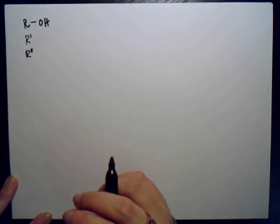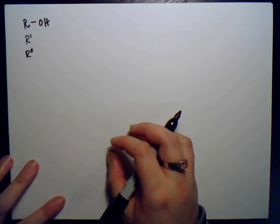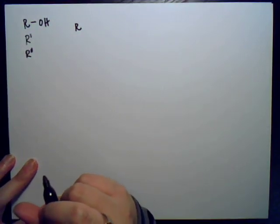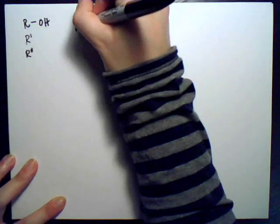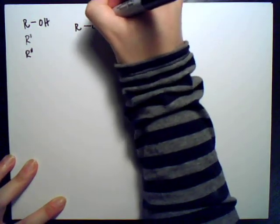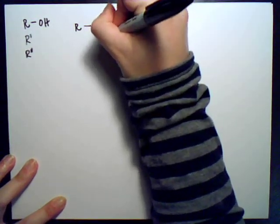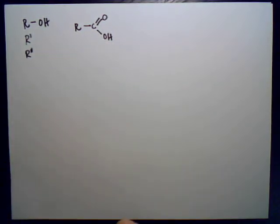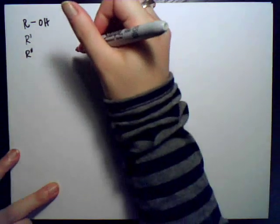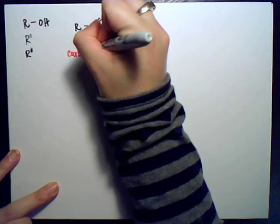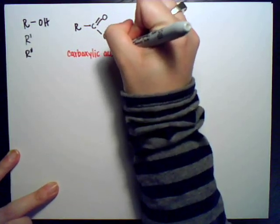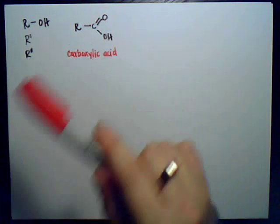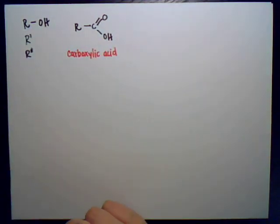The first functional group is COOH, called carboxylic acid. That is a carboxyl group, always represented by COOH, where that O up top is double bonded, and it's attached to an R group — R meaning any molecule.